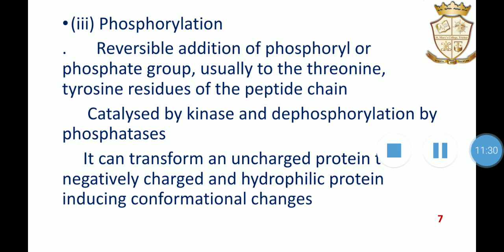Phosphorylation is a reversible addition of a phosphate group, usually to the threonine, tyrosine, or certain residues of the polypeptide chains. It is the commonest and one of the most important post-translational modification processes in animal cells. Phosphorylation and dephosphorylation can switch on or switch off many enzymes; it is catalyzed by the enzyme kinases, while dephosphorylation is catalyzed by the enzyme phosphatase. Phosphorylation can transform an uncharged protein to a negatively charged and hydrophilic protein, inducing conformational changes. This reaction regulates the biological functions of most proteins and plays a significant role in signal transduction, cell growth, cell cycle, and apoptosis, which is programmed cell death.